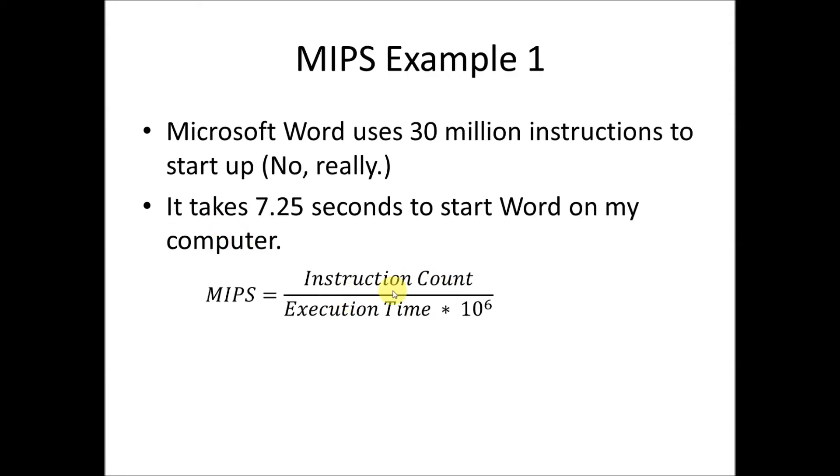So I use this equation and I plug in an instruction count. I've got 30 million, which is 30 times 10 to the 6th, and I've got execution time, which is 7 and a quarter seconds. And you can see that the two millions cancel out, and that's the whole point because the unit is in millions. So all I have to do is divide 30 by 7.5, which gives me a whole four MIPS - screaming fast.